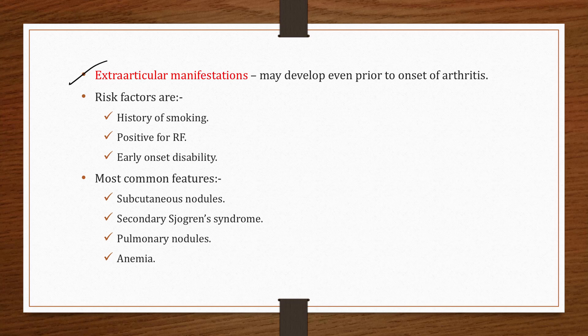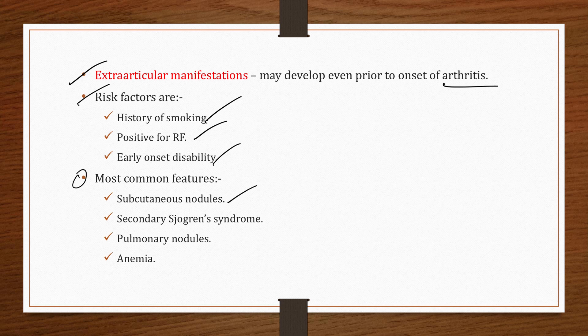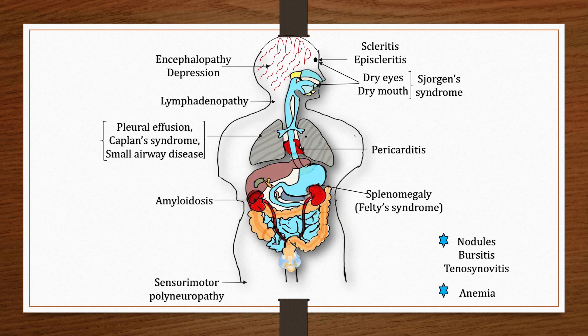Extra-articular manifestations may develop even prior to the onset of arthritis. Risk factors include history of smoking, positive rheumatoid factor, and early onset of disability. The most common extra-articular features are subcutaneous nodules, secondary Sjögren's syndrome, pulmonary nodules, and anemia. Secondary Sjögren's syndrome occurs when a patient has Sjögren's symptoms alongside another rheumatic disease like RA, SLE, or scleroderma.